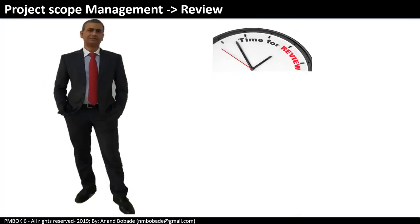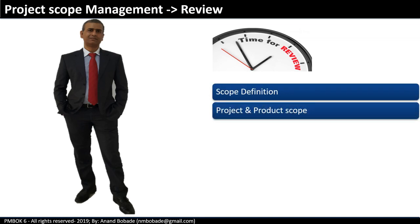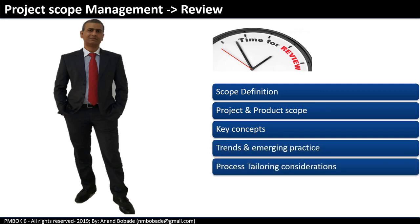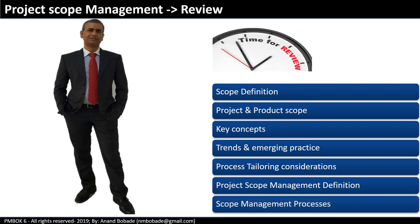Great job — we have completed the overview of the Project Scope Management knowledge area. Let's do a quick review of topics covered: we started with scope definition, differentiated between project scope and product scope, and understood that product scope is a part of project scope. We went through key concepts, trends and emerging practices, process tailoring considerations, and considerations for agile. We also learned the scope management definition and had a brief overview of all six scope management processes. Keep learning — see you in the next session on Plan Scope Management, the first process in the Scope Management knowledge area.